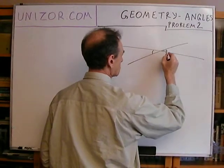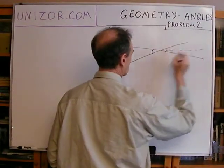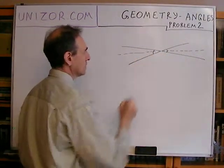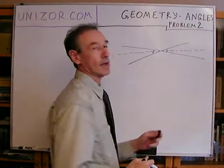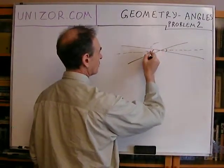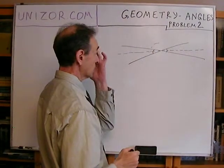If you will take a bisector of this angle and bisector of this angle, then these two bisectors form a straight line, which means basically that the angle from here to here is equal to 180 degrees.